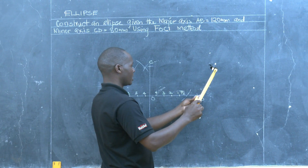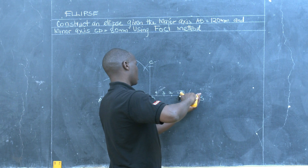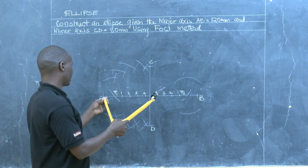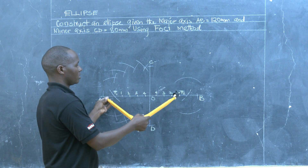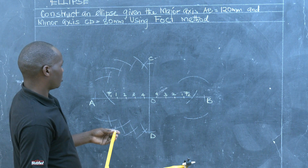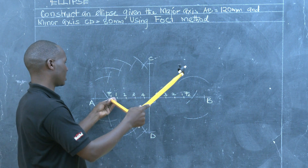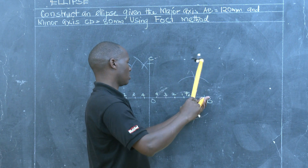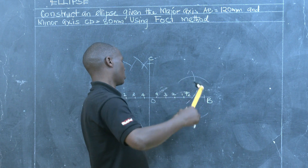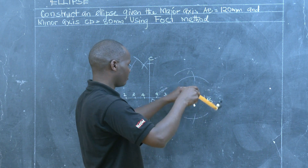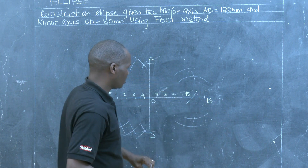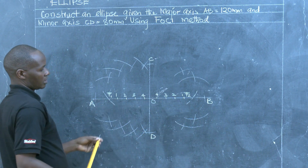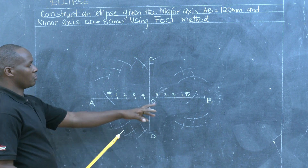We get distance B1, then using F2 as the center, describe an arc above and below. We get radius A1 on the right-hand side of the minor diameter, then using F1 as the center, describe an arc above and below to cut the previous one. We then repeat for points 3 and 4, getting distance B2 and using F2 and F1 as centers to describe intersecting arcs.